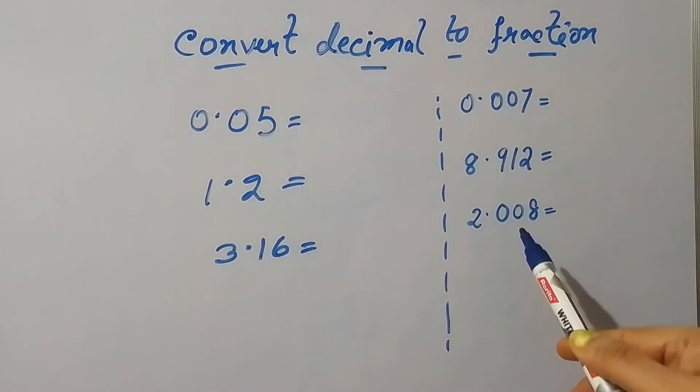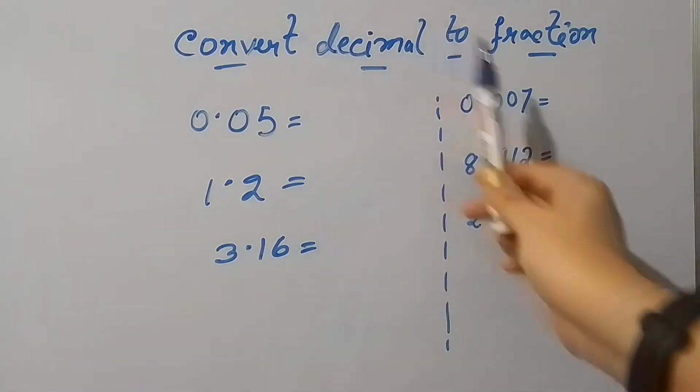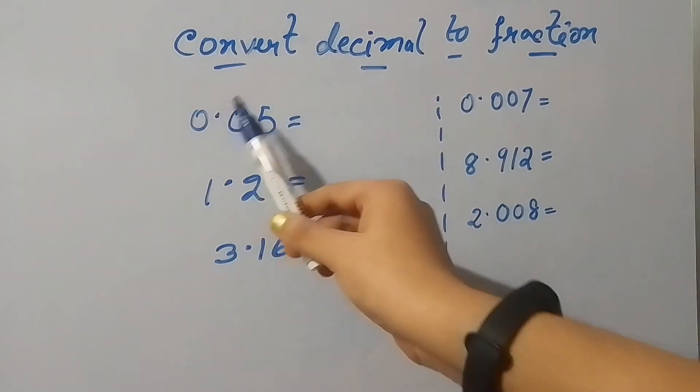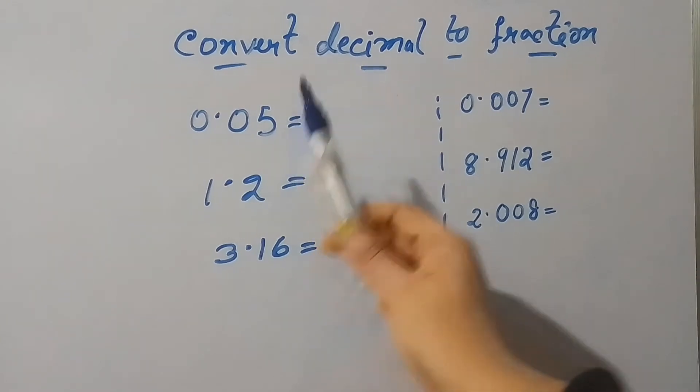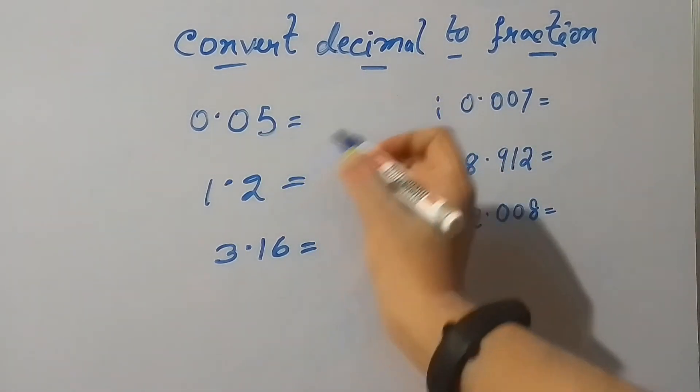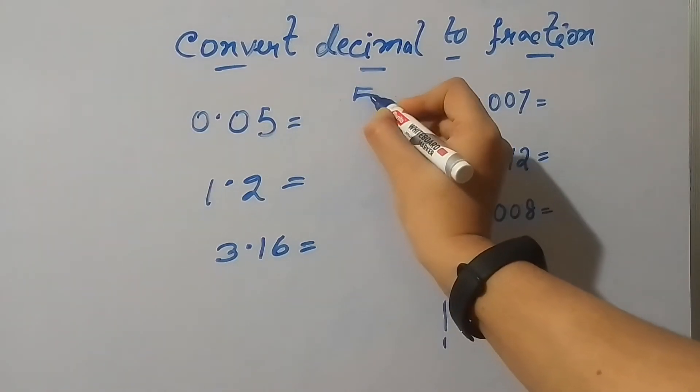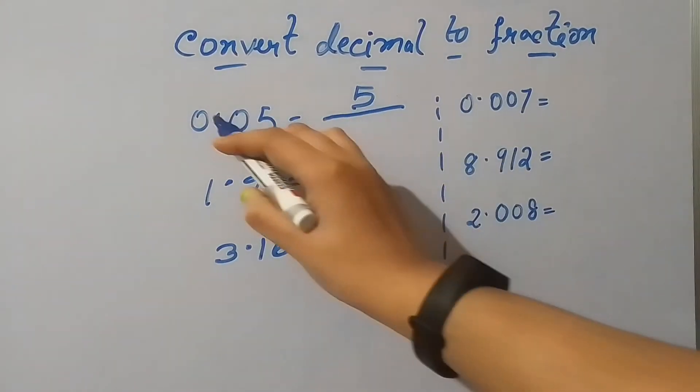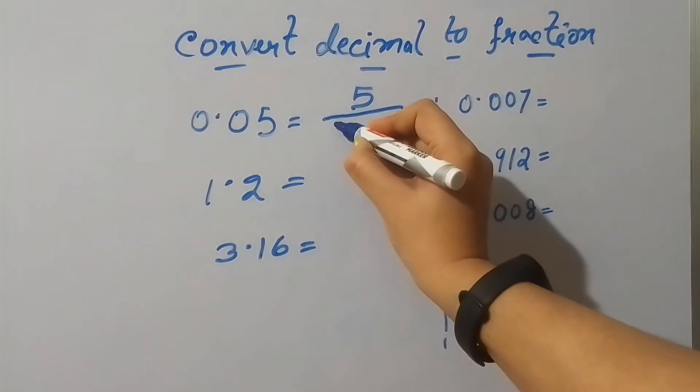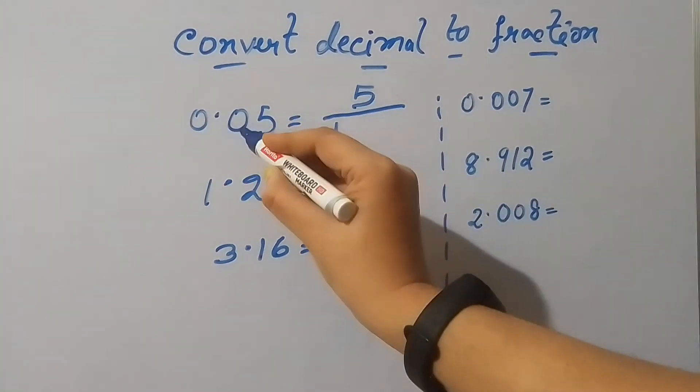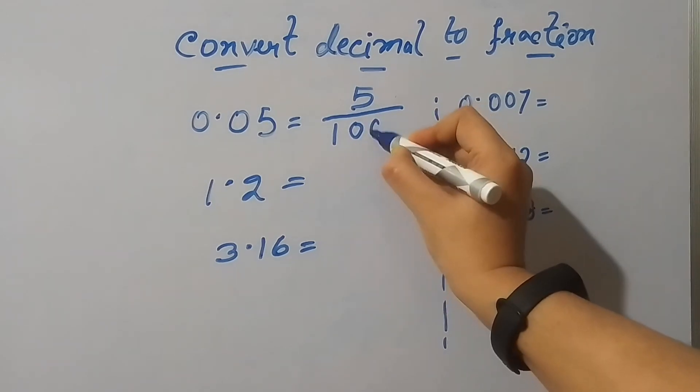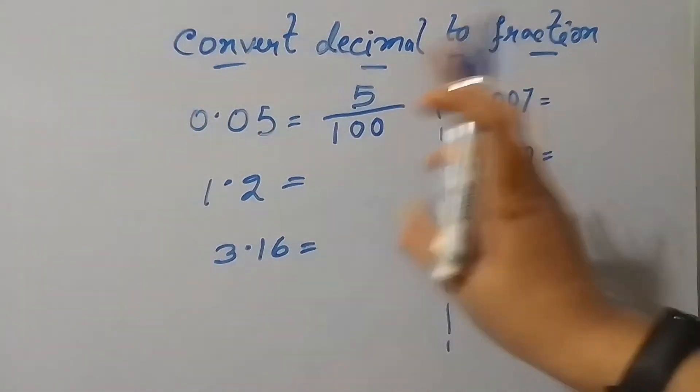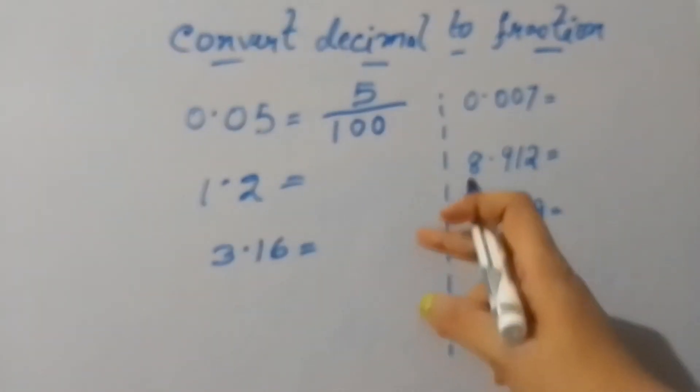Now I have taken some decimal numbers here and I am showing you how to convert decimal to fraction. Taking the first number, it is 0.05. I have to write the number first and put the dash. Now for decimal, I have to write 1, and on the decimal's right side, how many numbers are there, that many zeros I have to put. This is how I have to convert all the decimal numbers into fractions.